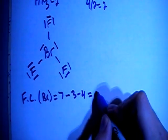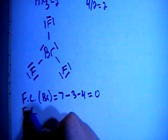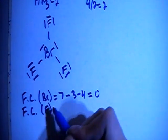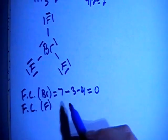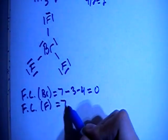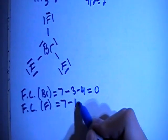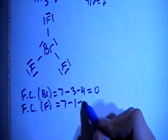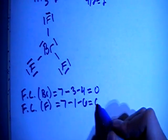And then the formal charges for each of the fluorines, notice they all have the same set-ups, so their formal charges should all be equal. It's going to be 7 valence brought in for each, minus 1 bond for each fluorine, minus 2, 4, 6 non-bonding electrons for each fluorine, which is also 0.